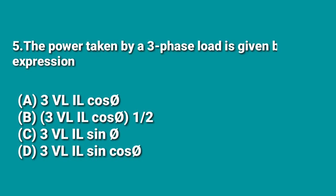The fifth question is: the power taken by a three-phase load is given by the expression — A: 3·VL·IL·cosφ, B: √3·VL·IL·cosφ, C: 3·VL·IL·sinφ. The answer is B, that is √3·VL·IL·cosφ. In three-phase systems the formula is √3·VL·IL·cosφ or equivalently 3·Vphase·Iphase·cosφ, so B is the correct answer.